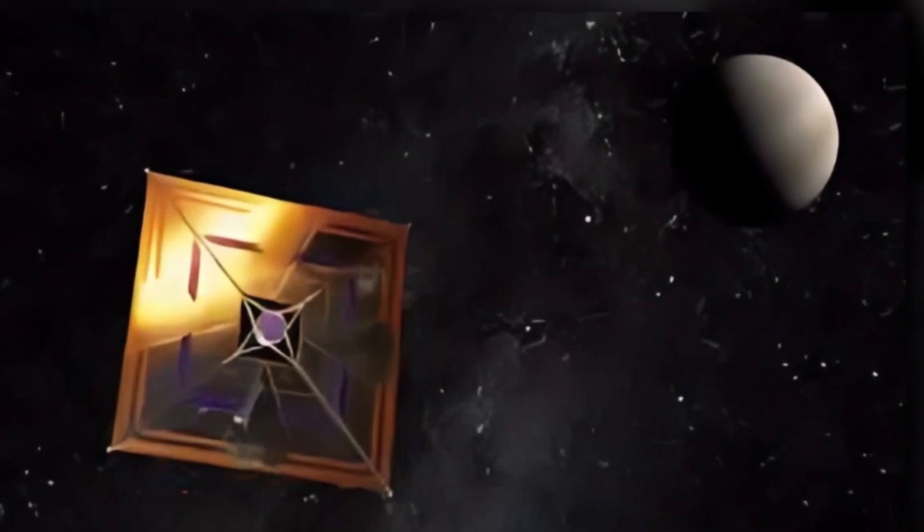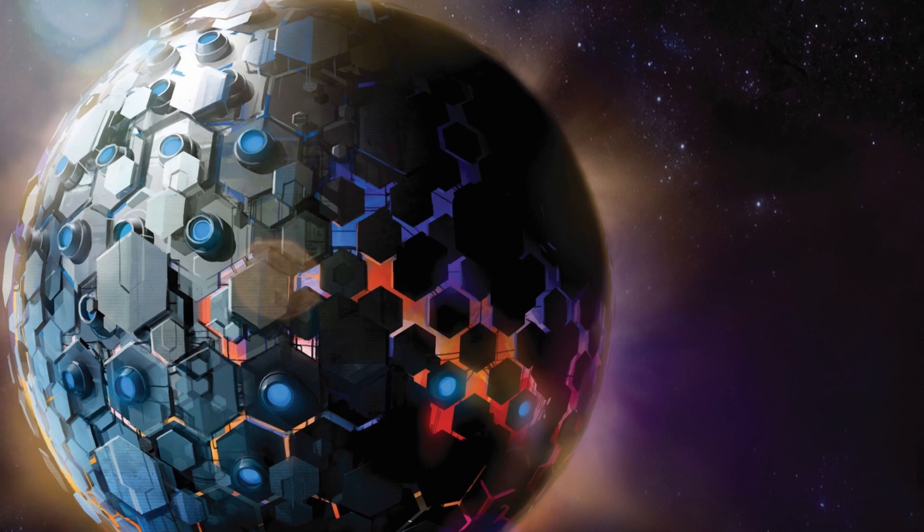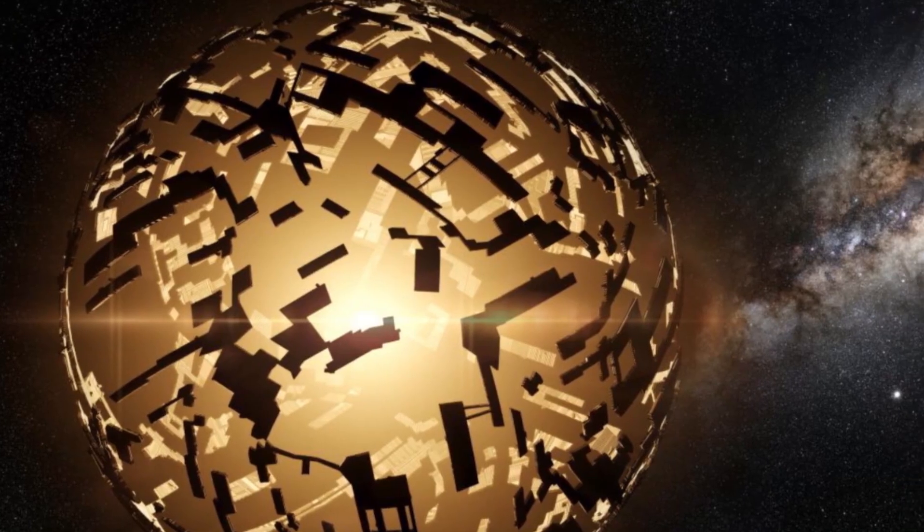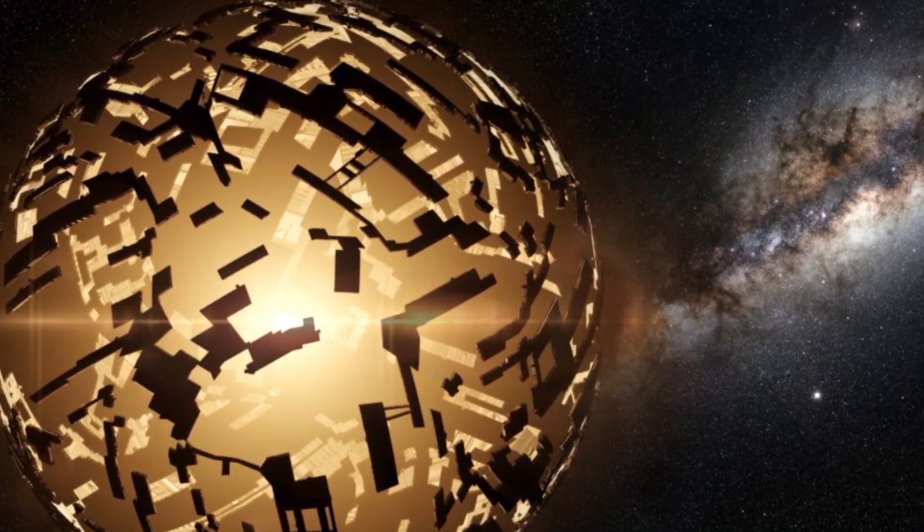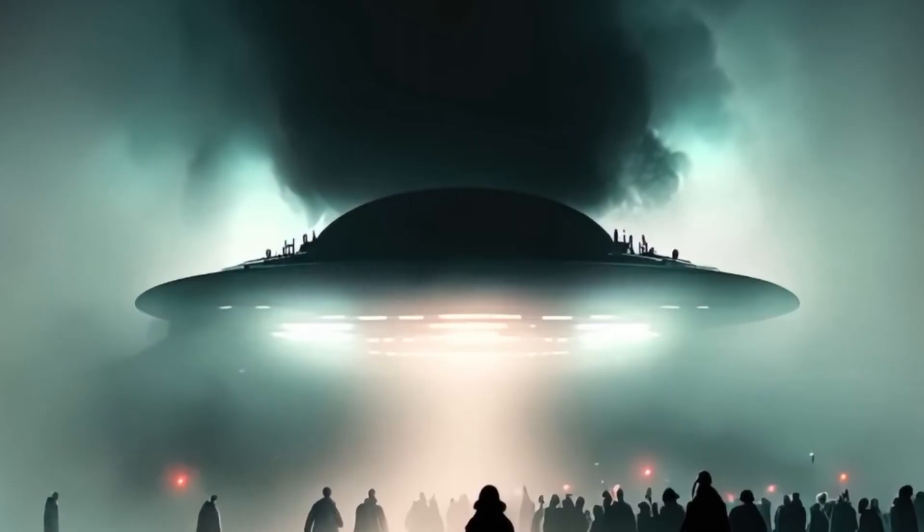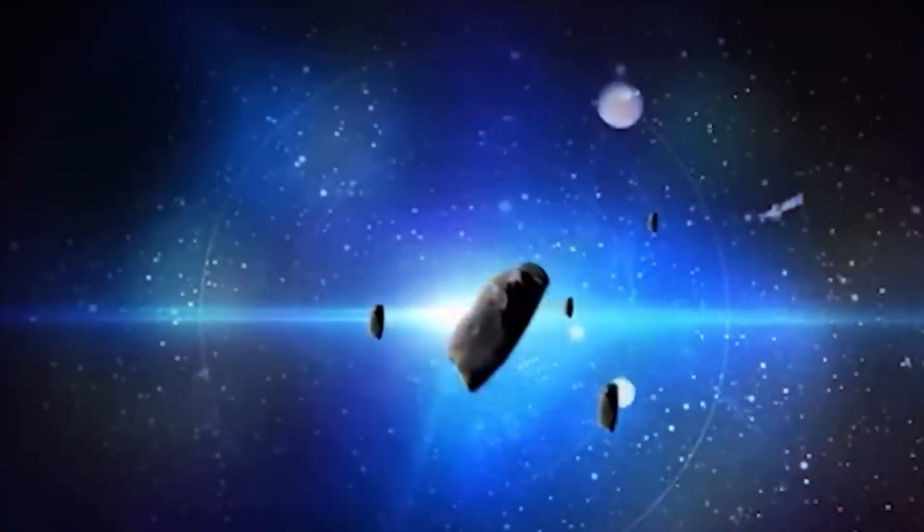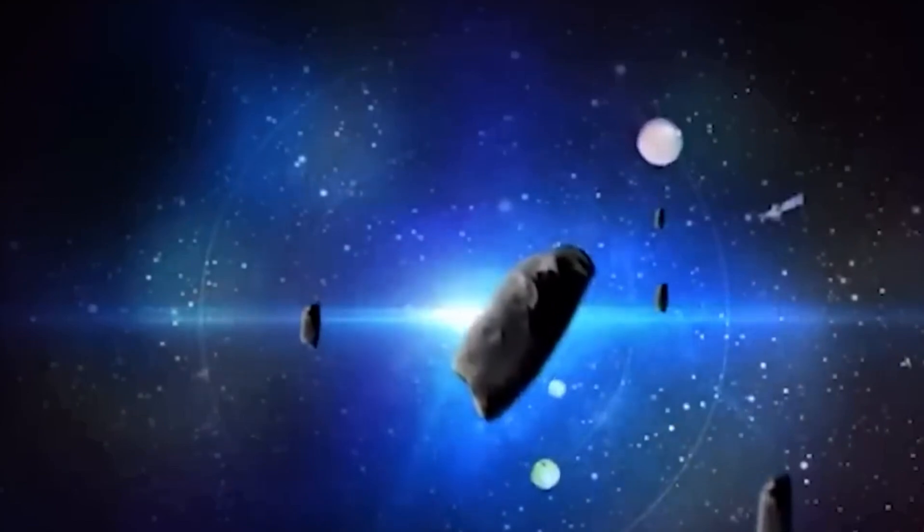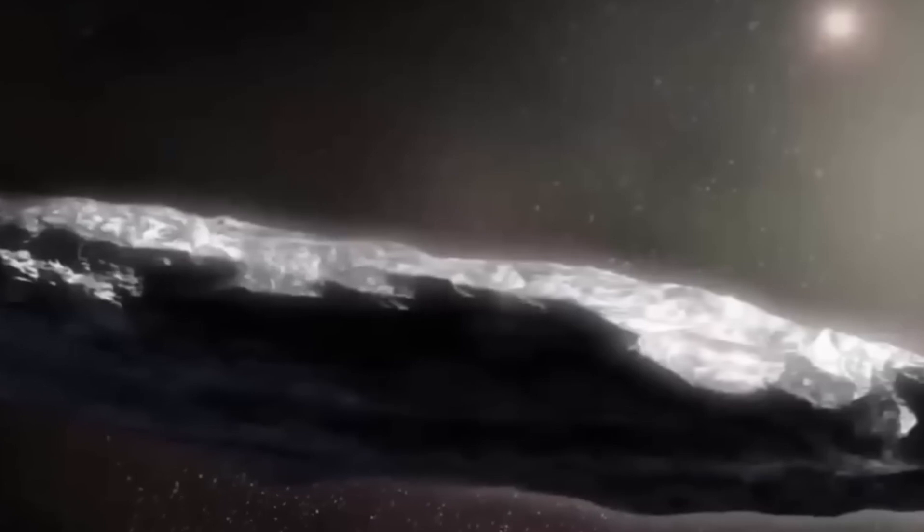The JWST stands as evidence of cutting-edge engineering and astronomical technology. It features a primary mirror that is 6.5 meters in diameter, making it significantly larger than the Hubble Space Telescope's mirror. This large mirror allows the JWST to collect light from extremely faint and distant objects in the universe.